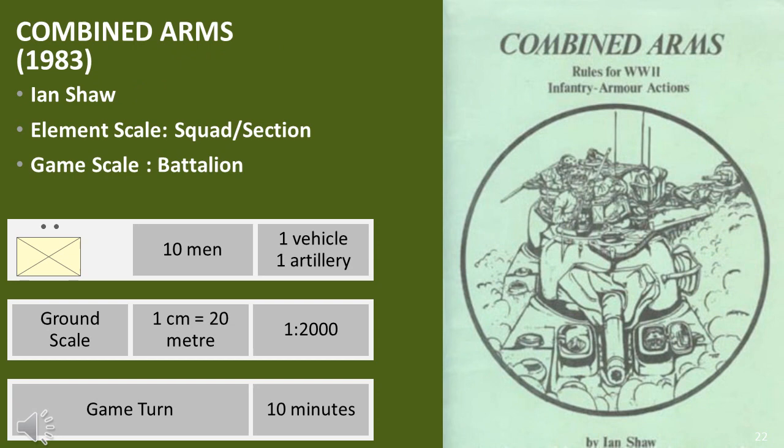Ian Shaw, along with Bruce Ree Taylor, provided a lot of supporting material for the WRG rules. Like Bruce, Ian decided to create his own set of rules. While more complex than WRG, they were simpler than Challenger and focused on World War II. There were no revolutionary ideas, but they were well-written and structured. I suspect they were mostly purchased by experienced players who wanted more than WRG could provide.